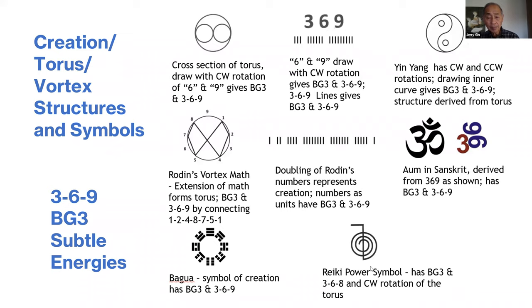The Reiki power symbol also has BG3 and 369 energies. This shows the clockwise motion of creation. You always draw this in a clockwise motion from the center in the Asian written language. All these structures and symbols have 369 and BG3 energies.